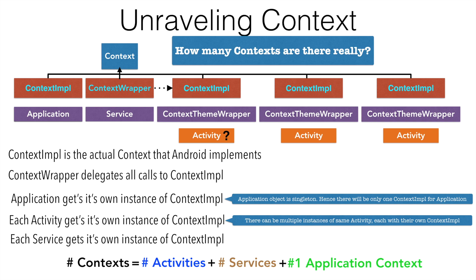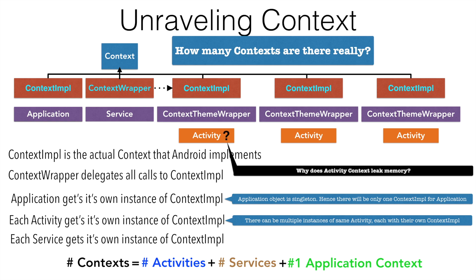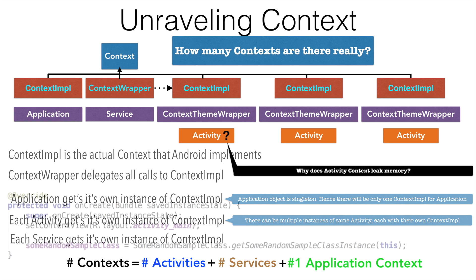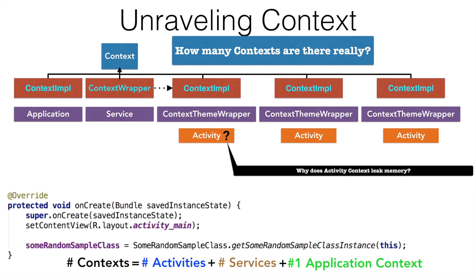Now with this information at our disposal, let us revisit the question: why does activity context leak memory? If you recall, this was the code snippet where we had passed 'this' — that is, an activity — as an argument to the singleton object. What was actually happening was when the activity was in portrait mode, you had one context.